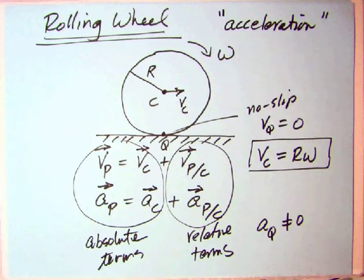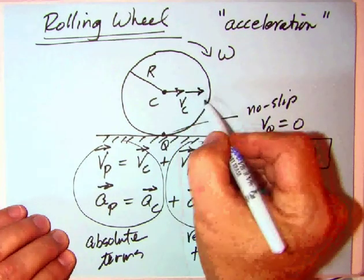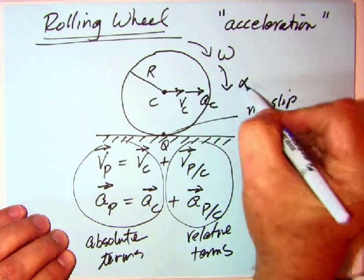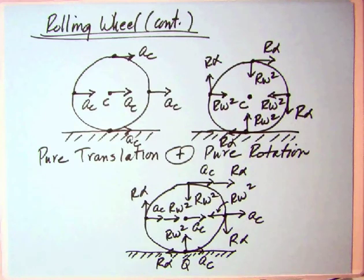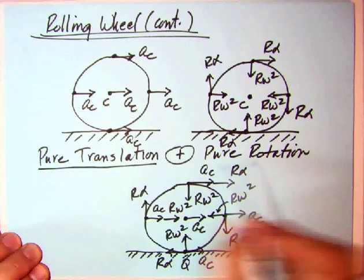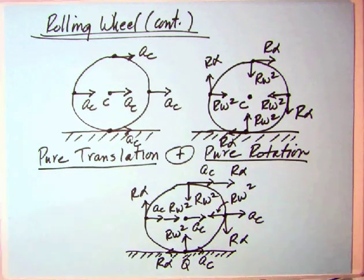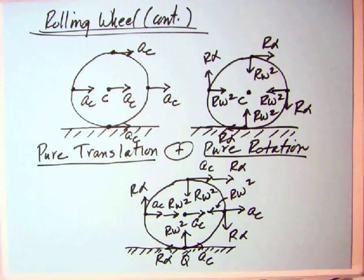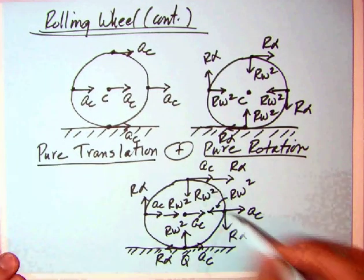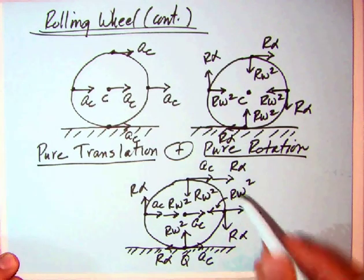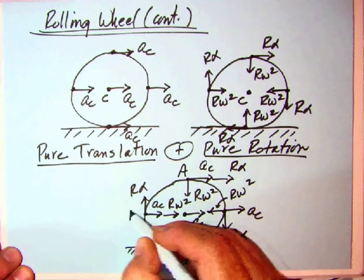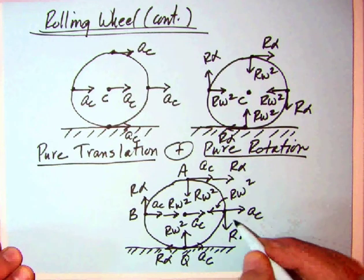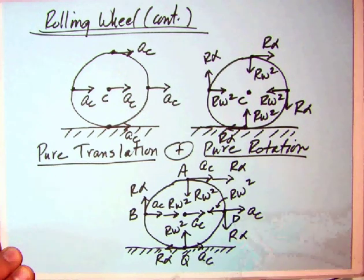Let's add those together and see what happens. Combining both the pure translation plus the pure rotation, things get a lot more complicated but still very important here. There's an AC everywhere for all the four points. Let me label these: A at the top, B on the right, the center is C, point D on the left, and point Q down here.